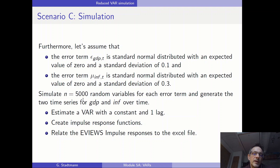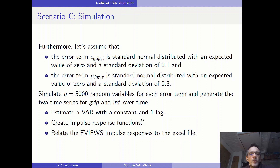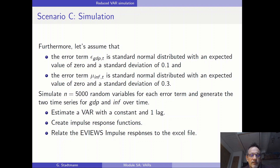We are performing that in Excel. Then we are copying the information to EViews, where we are estimating a VAR with a constant and one lag. We are creating impulse response functions and relating these from EViews to the ones we created in the Excel file.